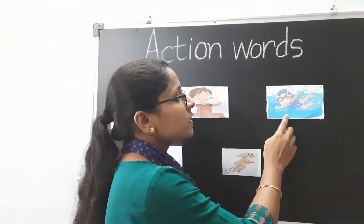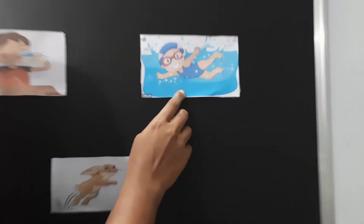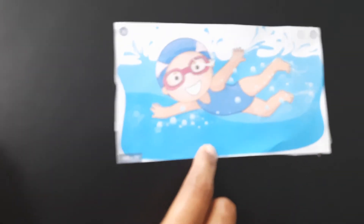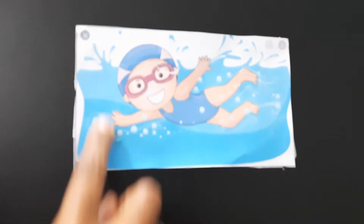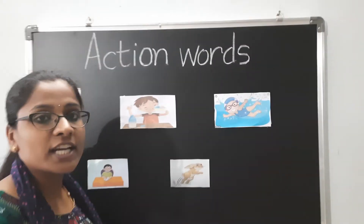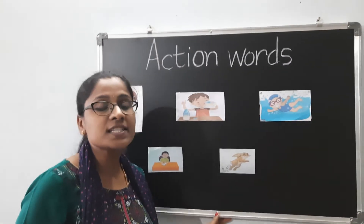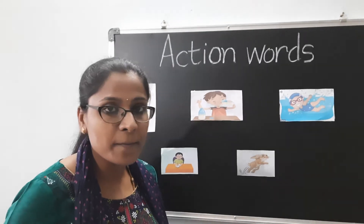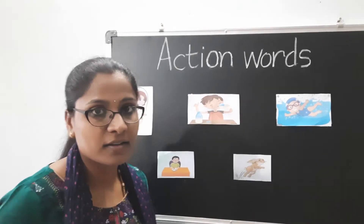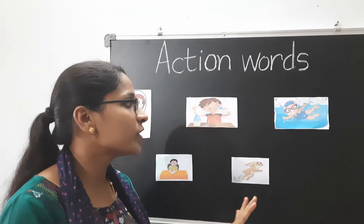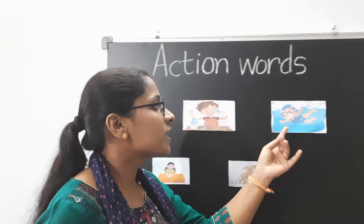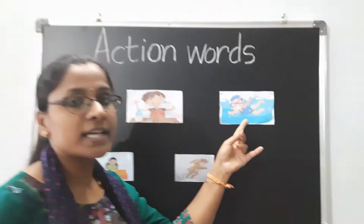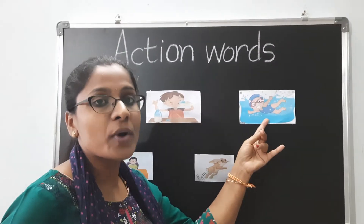What is the third picture we have here? Swimming. What is she doing? She is swimming. So here the action word is swimming.